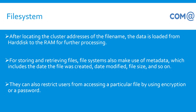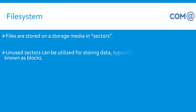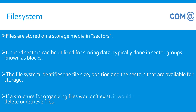For storing and retrieving files, the file system also makes use of metadata, which includes the date the file was created, date modified, and file size, and so on. The file system can also restrict users from accessing a particular file by using encryption, password, or any other mechanisms.